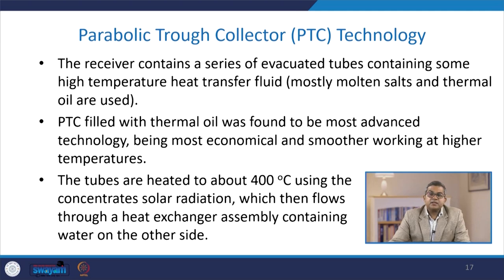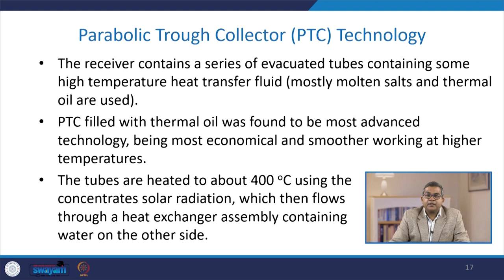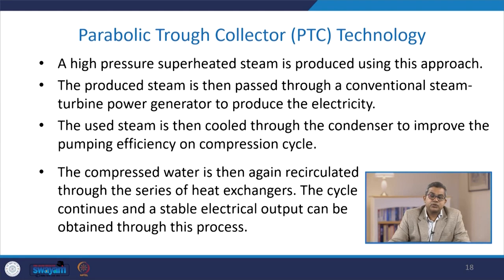The receiver contains a series of evacuated tubes containing high-temperature heat transfer fluid. This can be molten salt, thermal oil, or synthetic oil, depending upon the use and how much heat transfer capacity is required. These are filled with thermal oil, which was found to be the most advanced technology, being the most economical and providing smoother working at high temperature. These tubes are heated to about 400 degree Celsius using concentrated solar radiation, which then flows through a heat exchanger assembly containing water on the other side, allowing heat transfer to take place.